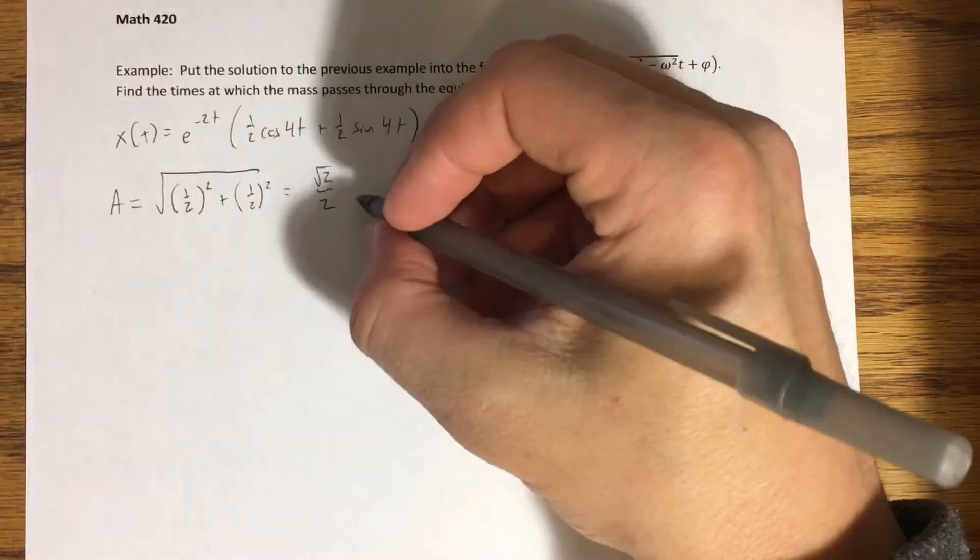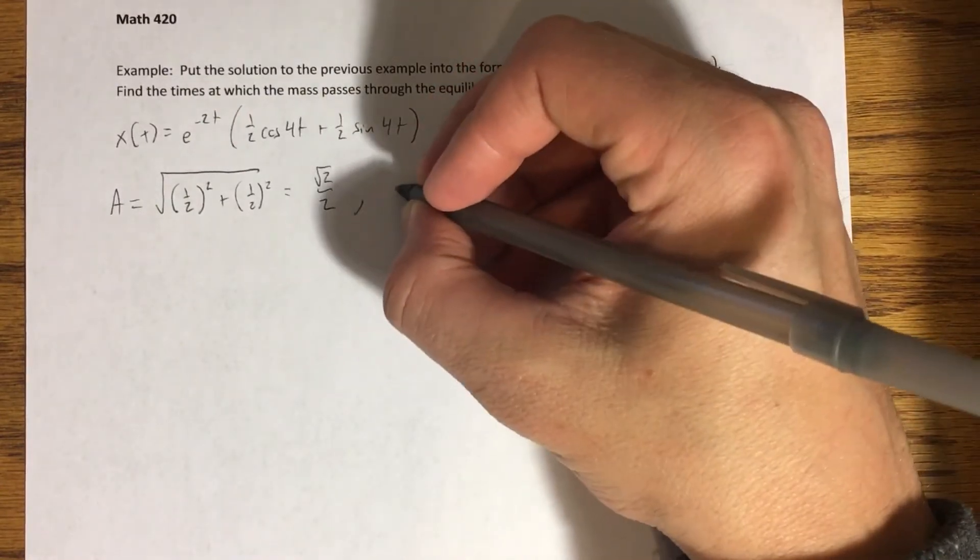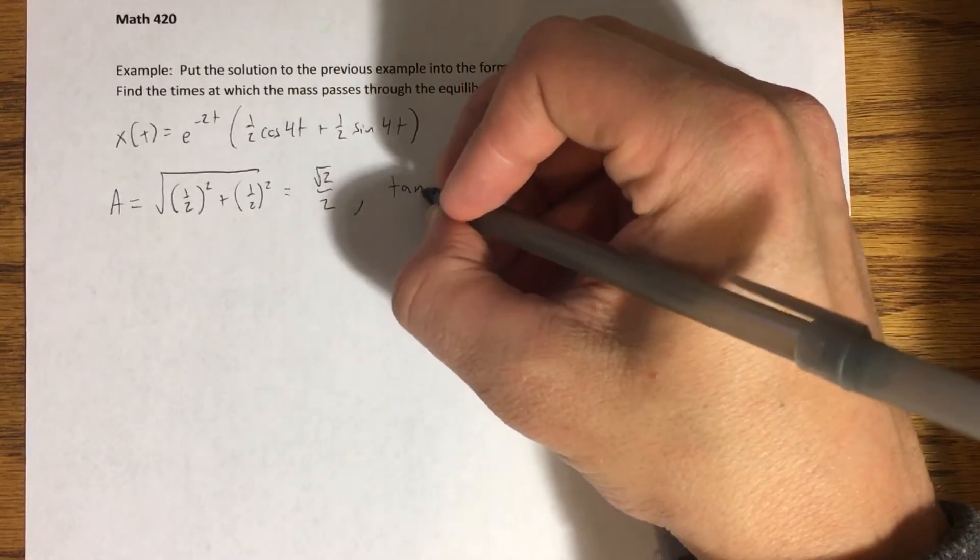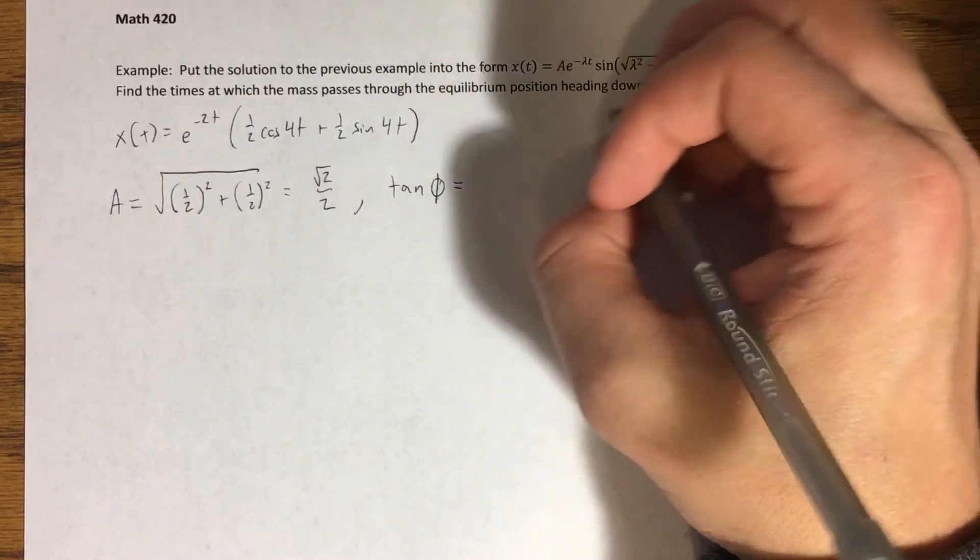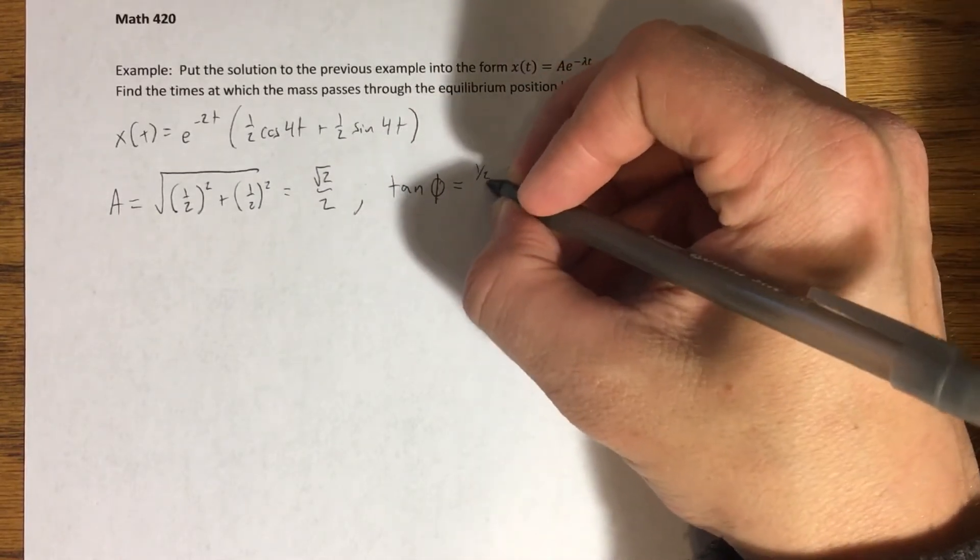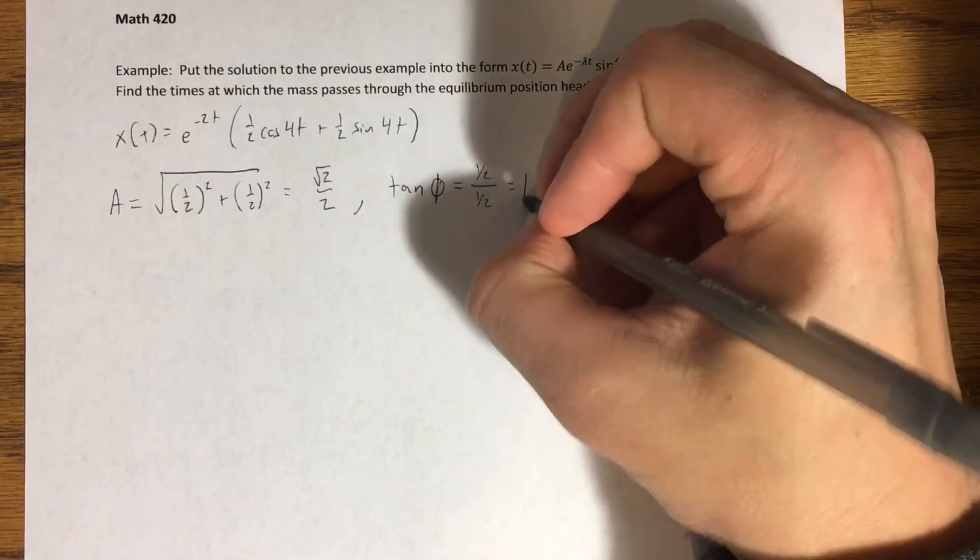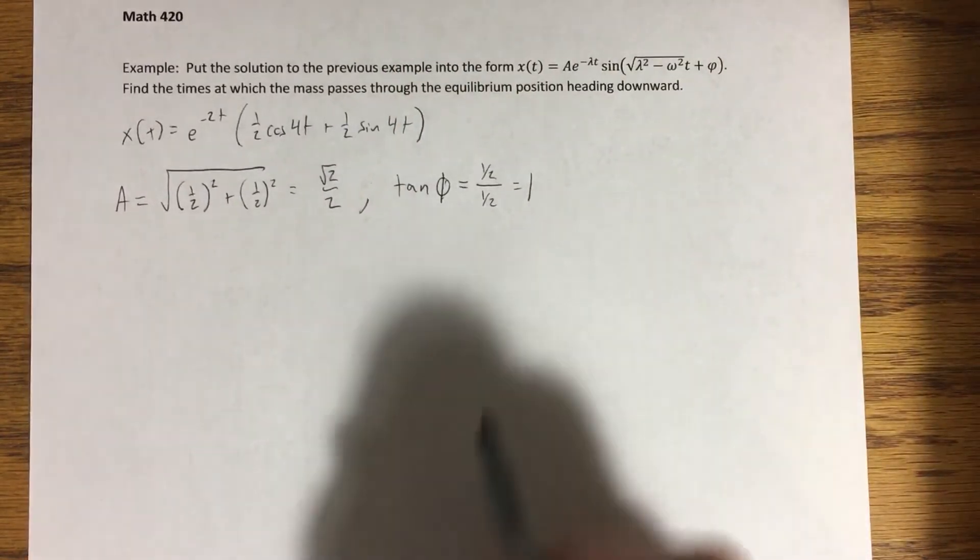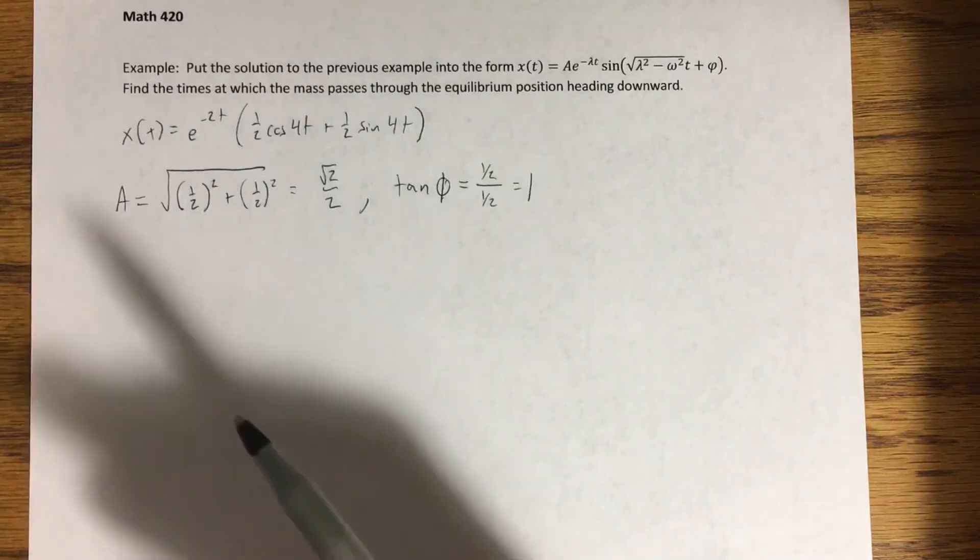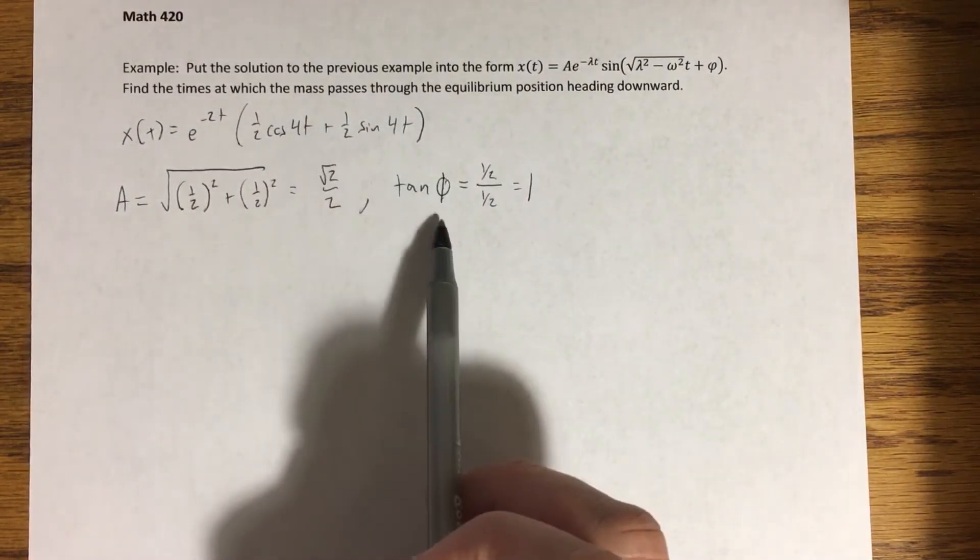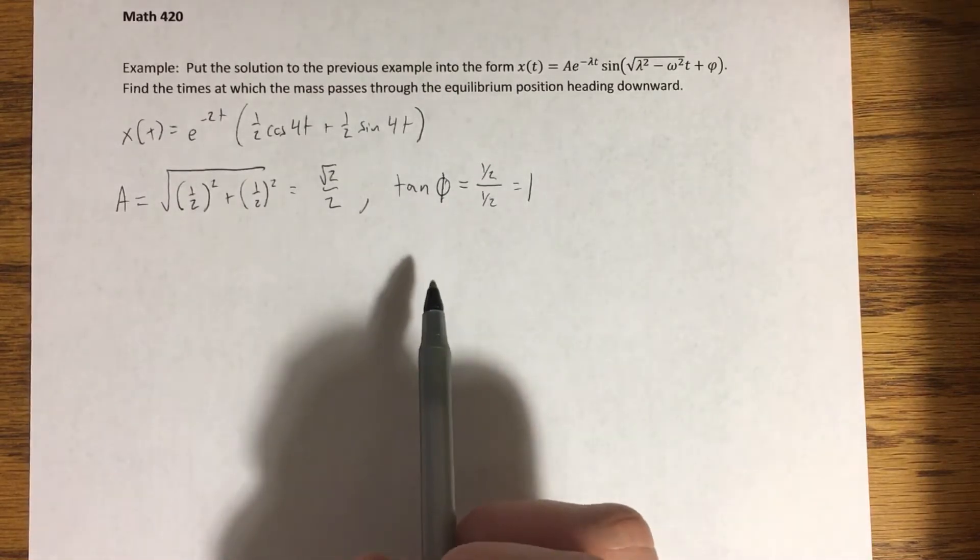So this means A is going to equal the square root of C1 squared plus C2 squared. That's one half squared plus one half squared, which comes out to root two over two. Okay. Our phase angle has this relationship. Tangent of phi is equal to C1 over C2. One half over one half, which equals one.